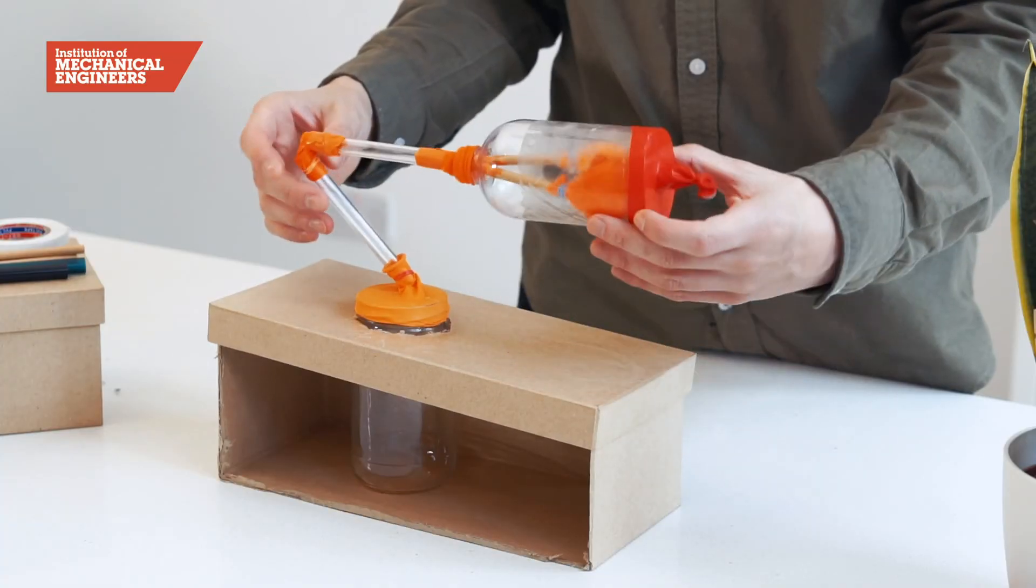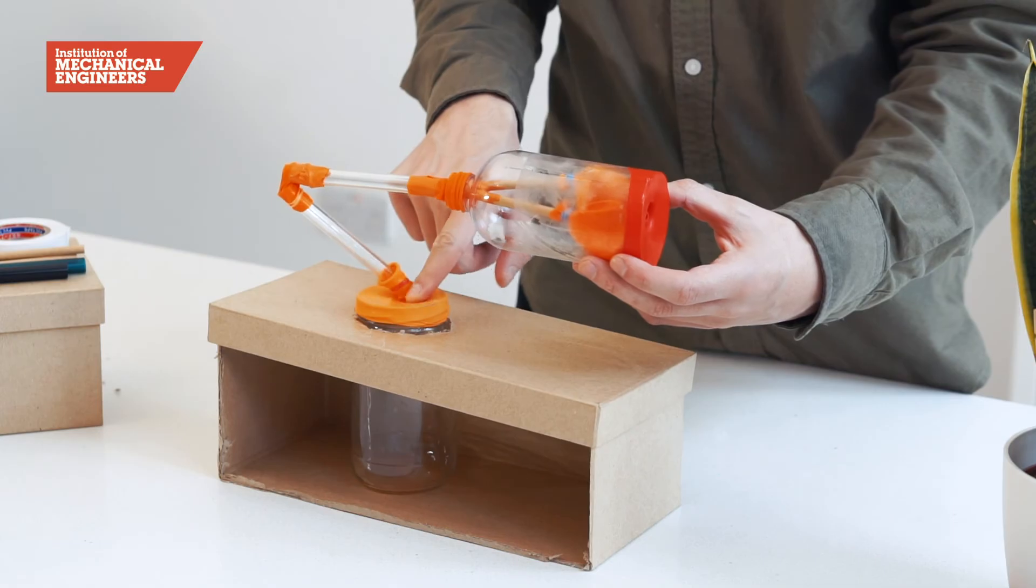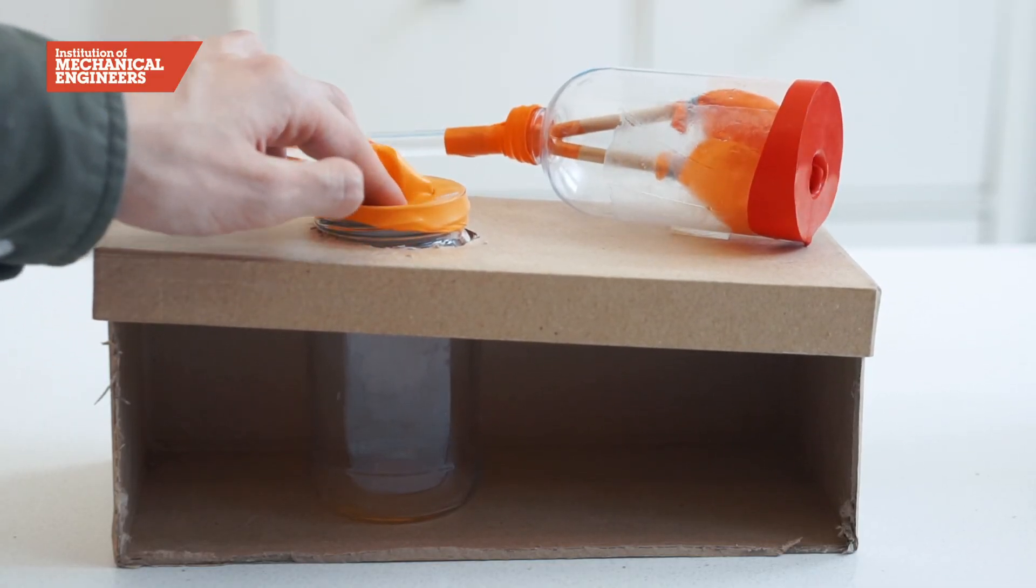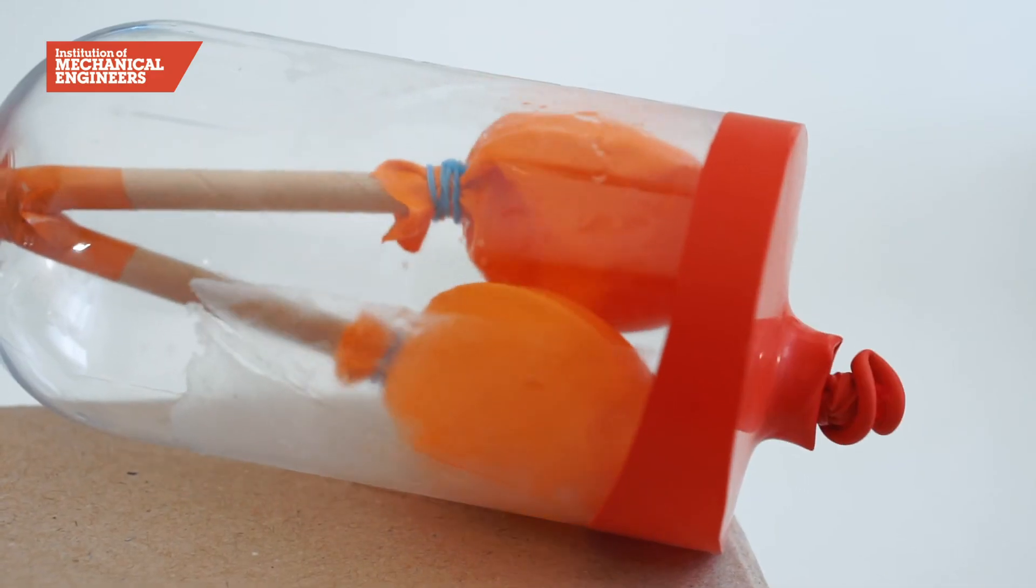Now we can see that when the balloon on the top of the jar is pressed down the volume in the jar inside decreases which increases air pressure and forces air out of the jar down the straw to the trachea. This air then inflates the balloon lungs.